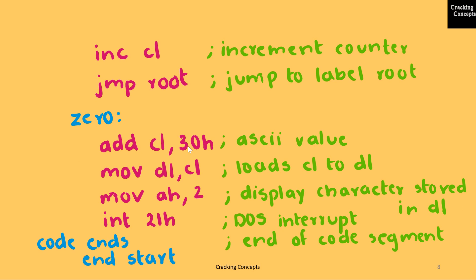When AL is 0, we perform a jump to the label ZERO. Then CL will be the register that is storing the number of steps, as we saw in one of the examples before. That number of steps will be the square root value. So before displaying it, I'll add 30h to it so that it is displayed in its ASCII form.